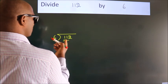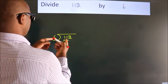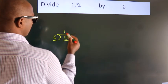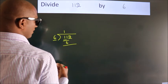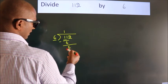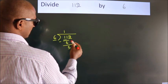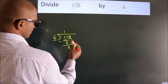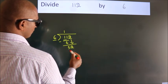A number close to 11 in the 6 table is 6 once, 6. Now we should subtract. We get 5. After this, bring down the beside number. So 2 down. So 52.